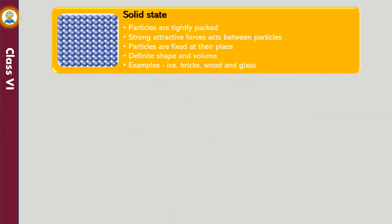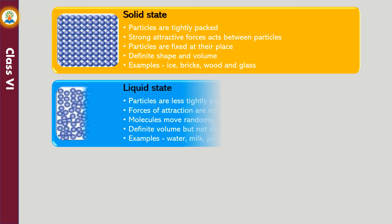In the solid state, particles are tightly packed. Strong attractive forces act between particles that hold them together. The particles are fixed at their place. Solids have definite shape and volume. Examples: ice, bricks, wood, and glass.